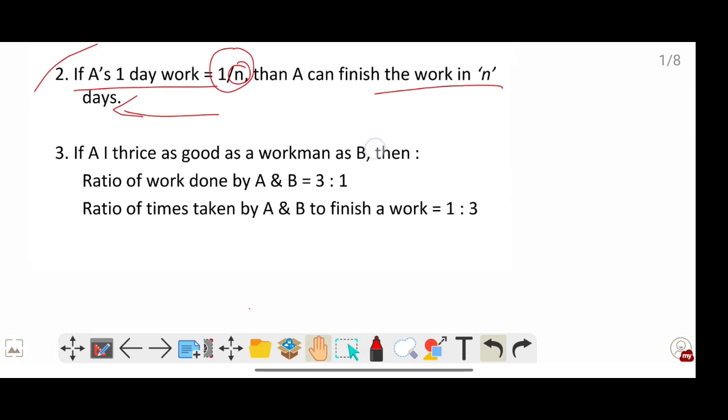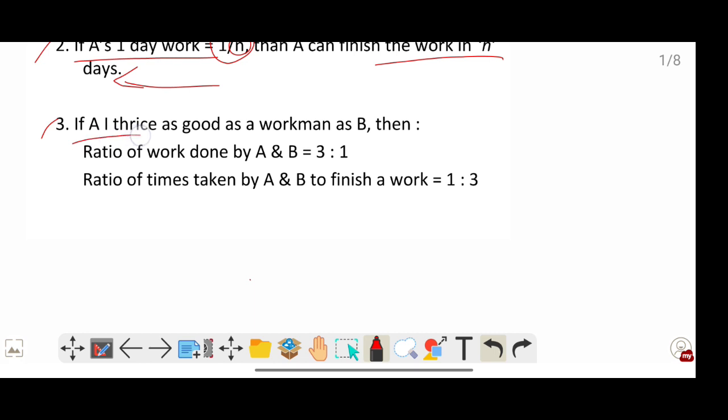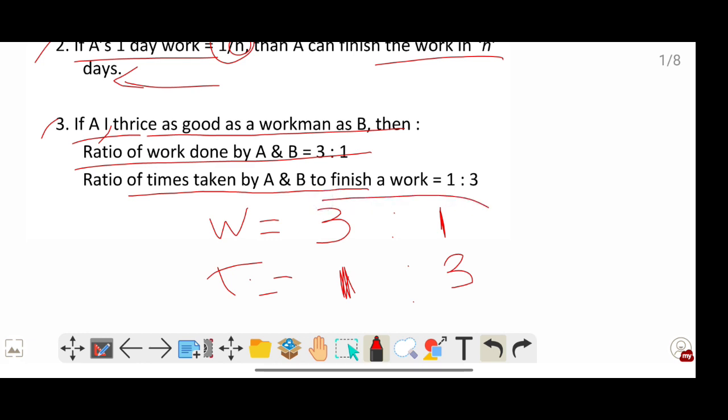Number three: if A is thrice as good a workman as B, then the ratio of work done by A and B will be 3:1. So A is three times better than B - A does three parts and B does one part. The time taken by A and B to finish a work will be the opposite of this ratio, so 1:3. A will take less time and do more work, while B will take more time and do less work.